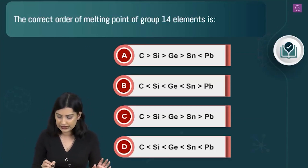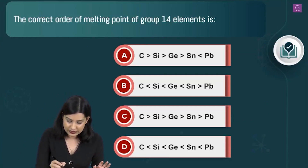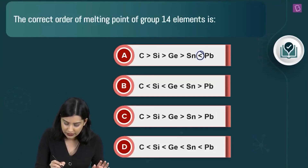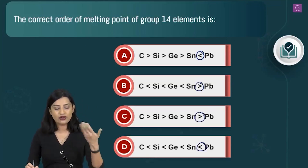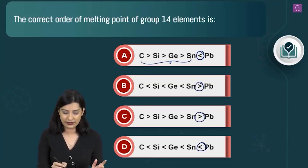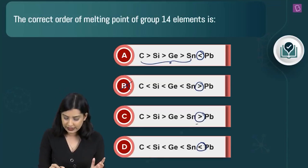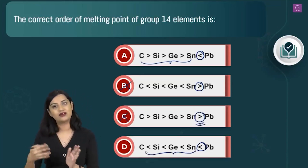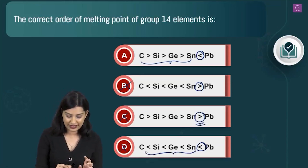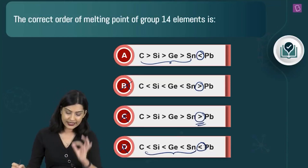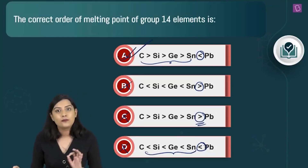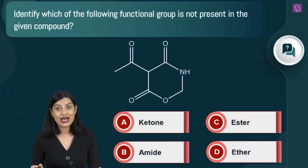The exception in the melting point trend kicks in between tin and lead. Option B can be discarded, option C is incorrect because of the tin-lead reversal, and option D has the order reversed. The correct answer is option A.